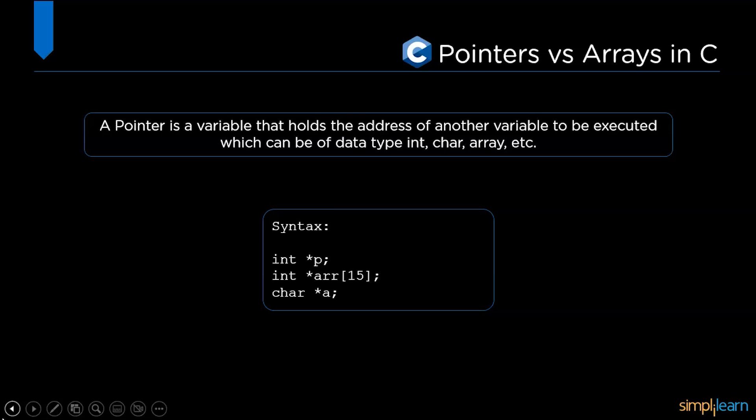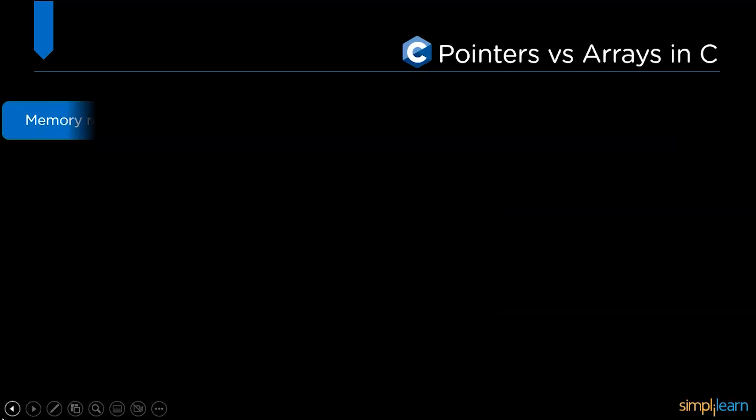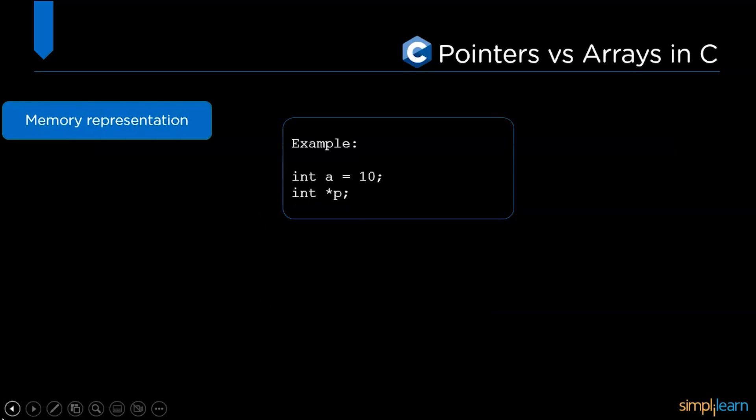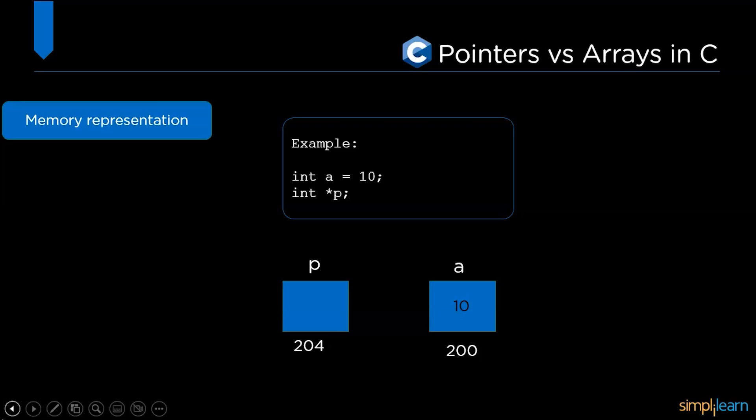To understand in a better way, let's have a look at the memory representation of pointers. Basically, when we declare a variable, memory is allocated and the value of a variable is stored in that memory at some address. In this example, let's consider the address to be 200. Similarly, when a pointer variable is declared, memory space is allocated and the value stored in that memory is the address of variable a.